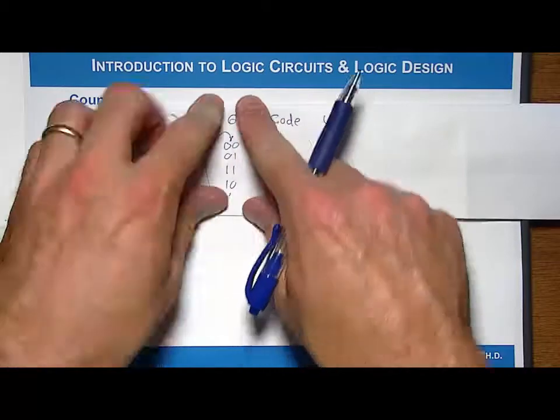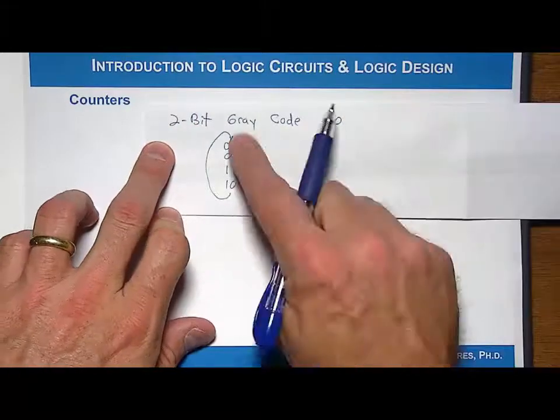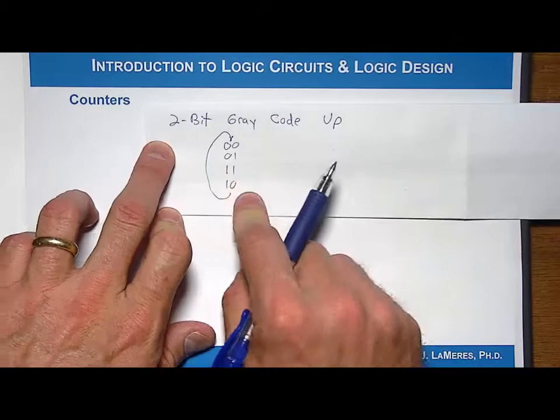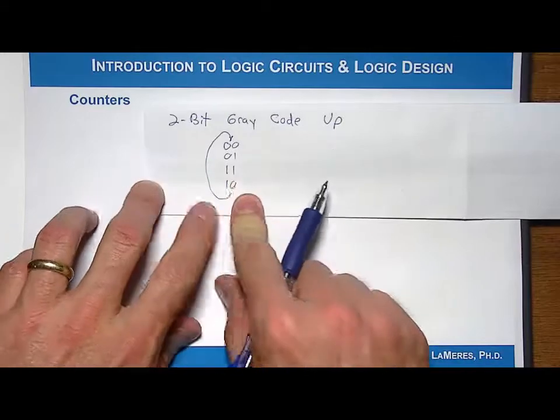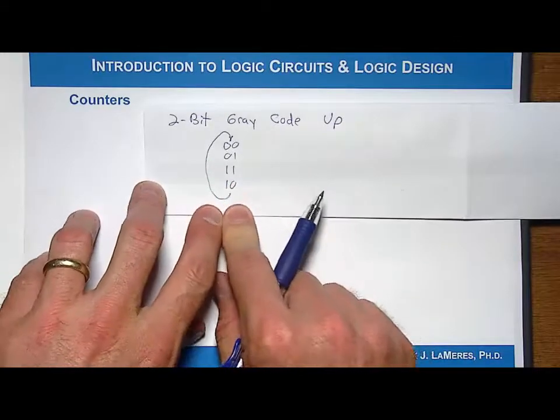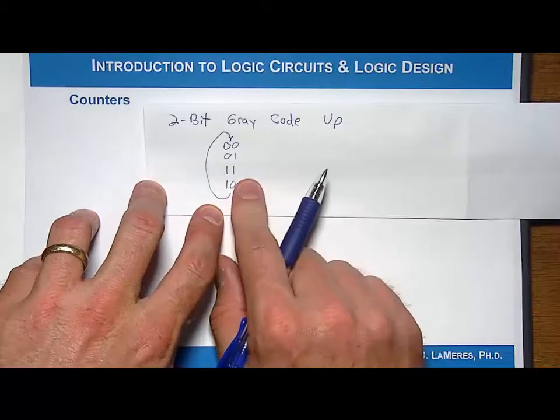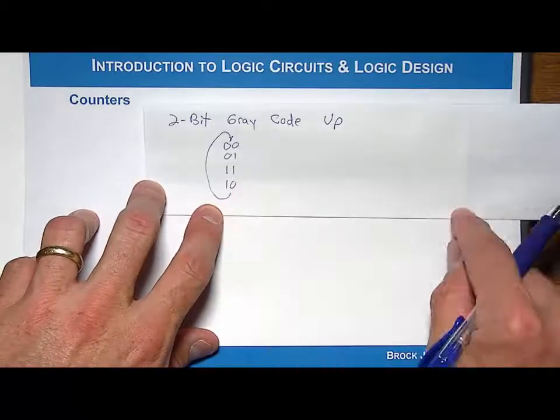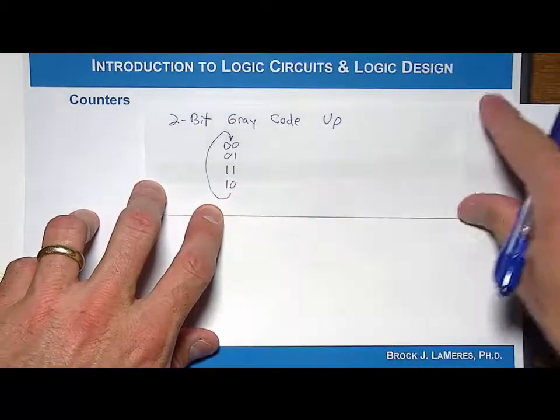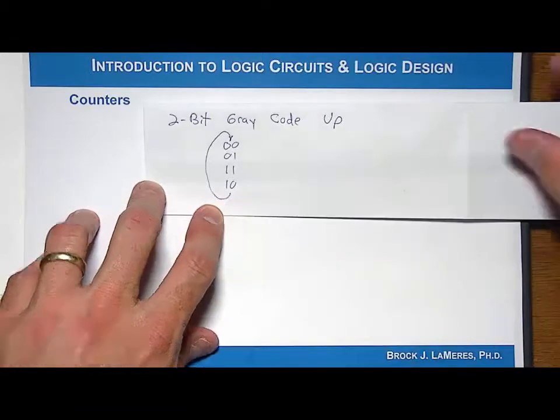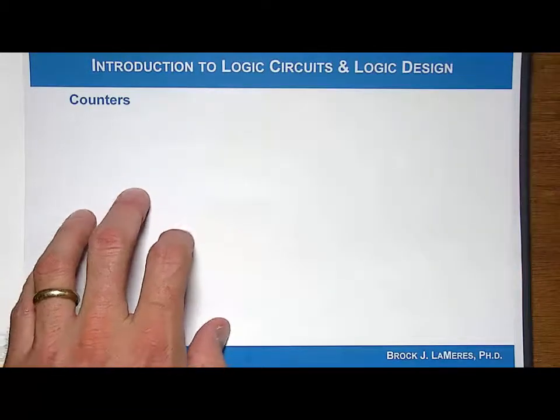A gray code counter is a neat example because it is a counter because the states traverse linearly. But this is going to be one of the first times where we have to be careful when we do our logic synthesis because the values in our state transition table, the inputs to our next state logic and output logic, are not going to be in a perfect binary count. So it's just something to be aware of.